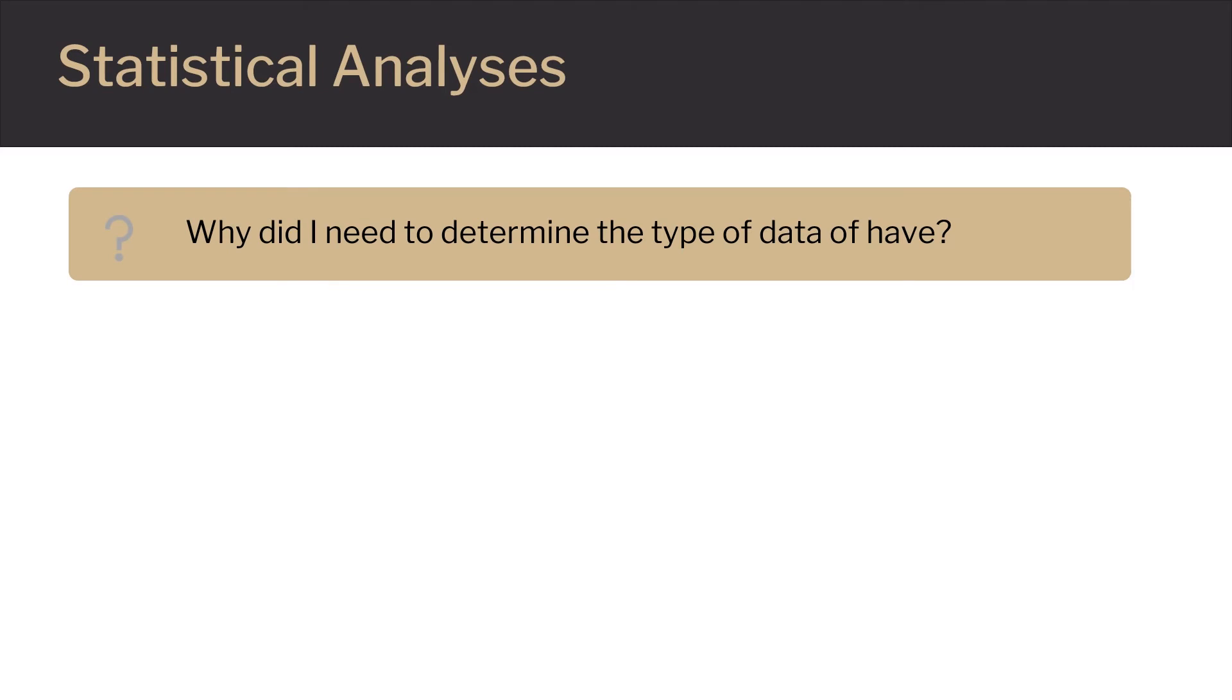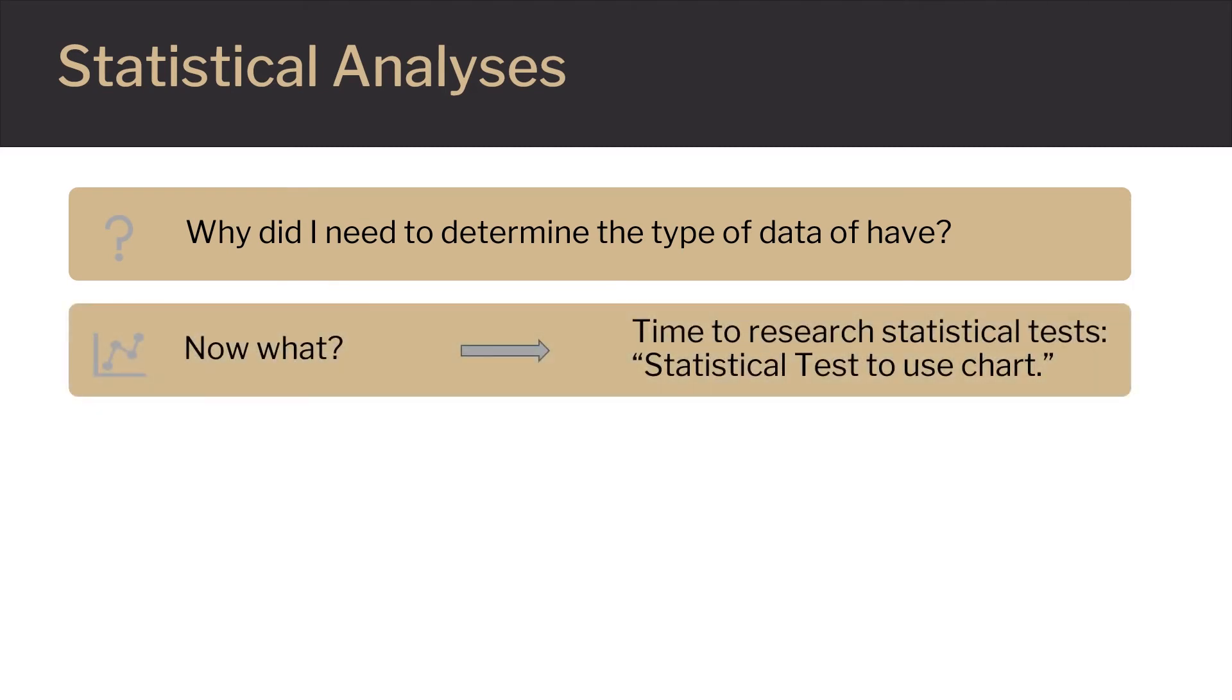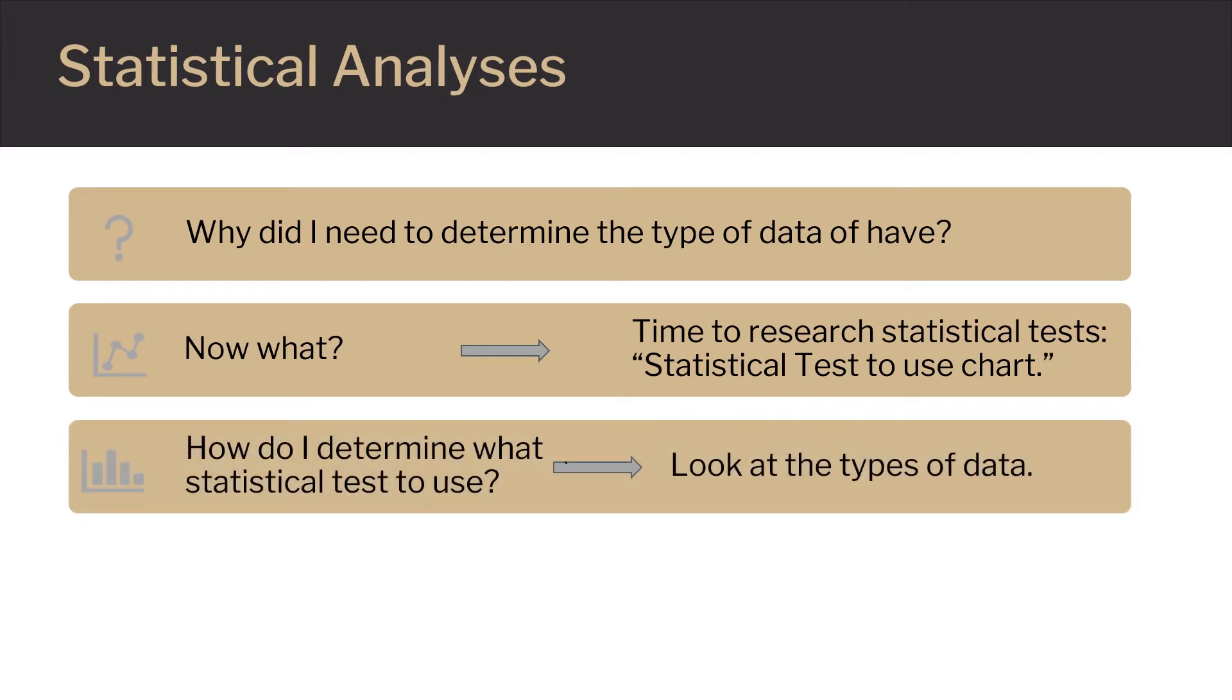Once you've determined the type of data you have, you can choose the most appropriate statistical test to analyze your data. That's why it's so very important to correctly identify the types of data you have and to identify which variables are dependent or independent. There are many websites that can give you reliable information here. Using a search engine, you can use the keywords statistical test to use chart to find a chart that is easiest for you to interpret.